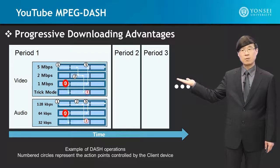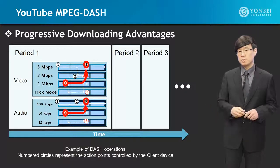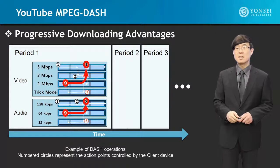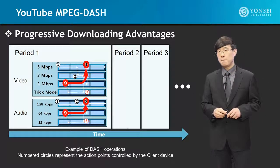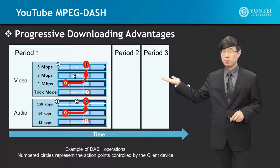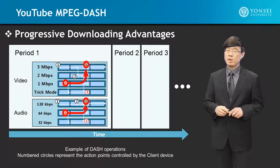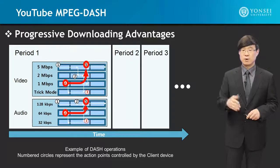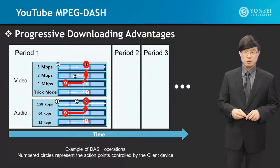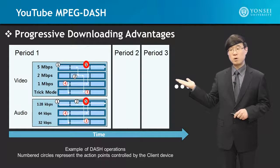Starting back at point four, as the network condition improves, we go to higher audio quality and video quality together, and that is how YouTube MPEG-DASH is controlling it. In this example only three video resolutions and a trick mode are shown, but YouTube videos can include more resolutions — up to eight levels as shown earlier. That is where our video is at stage five, and it continues on into period two.